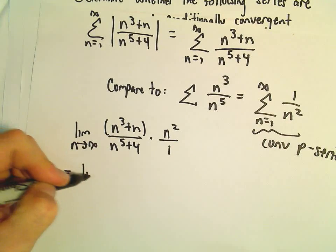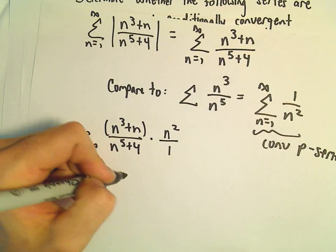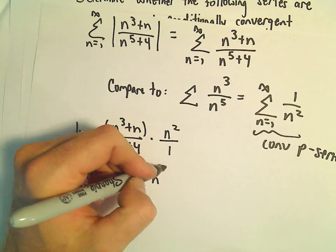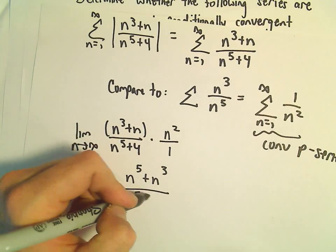Well, if we distribute our n squared to the numerator, we'll have n to the 5th plus n cubed over n to the 5th plus 4.